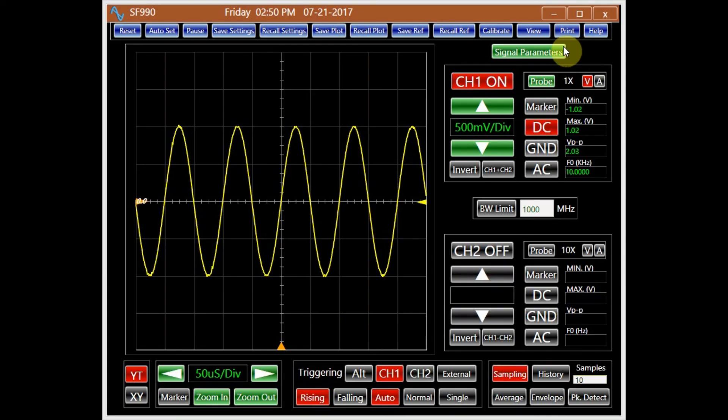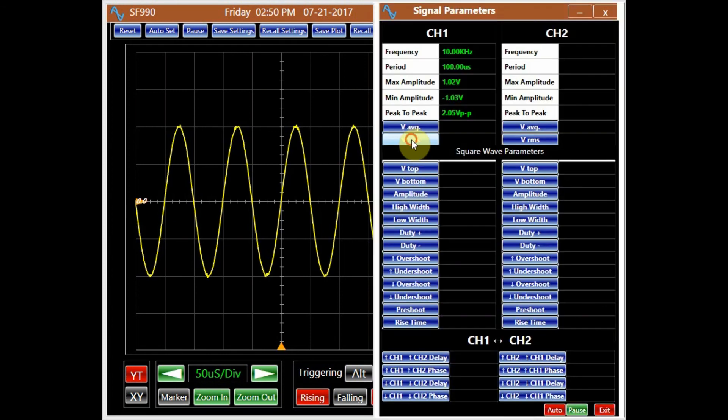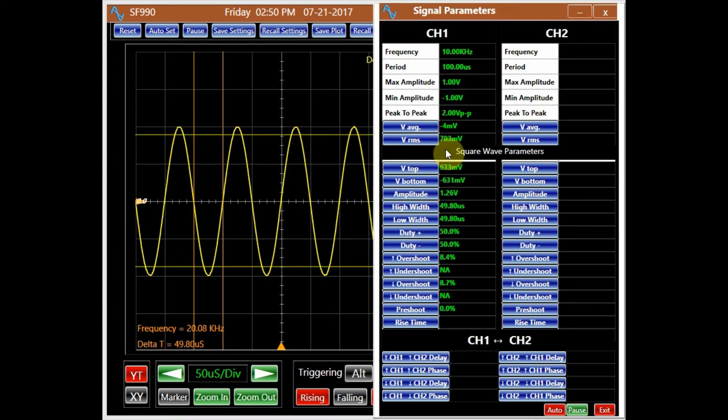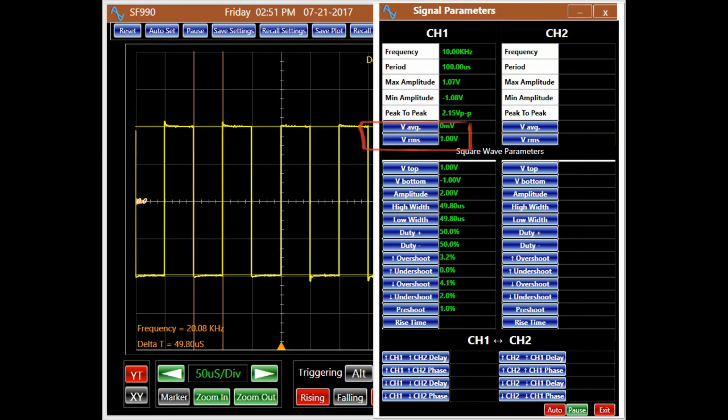Calculating the RMS values of some signals can be tedious. Some instruments like this Analog Arts Oscilloscope are equipped with features that provide the RMS value and other signal parameters.